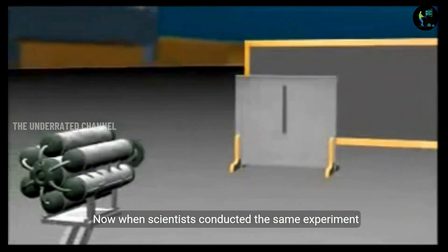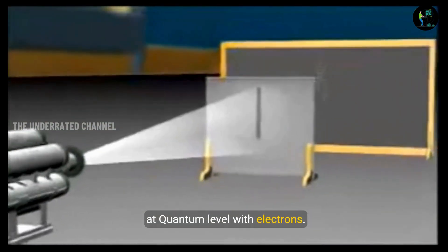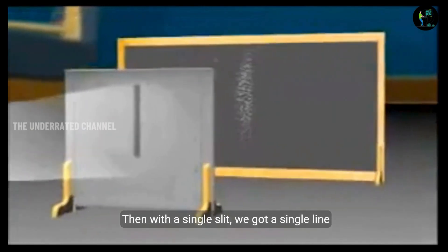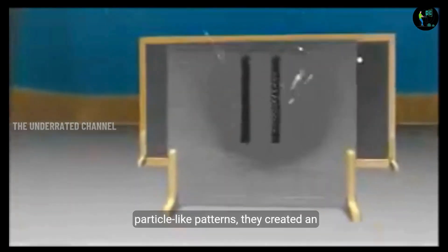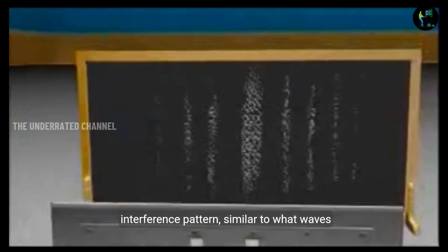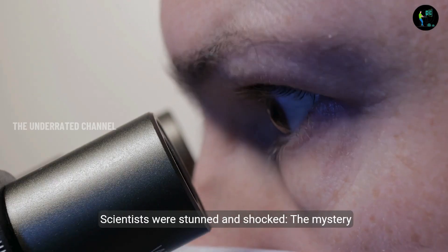Now, when scientists conducted the same experiment at quantum level with electrons, then with a single slit, we got a single line pattern. But with two slits, instead of forming two particle-like patterns, they created an interference pattern similar to what waves produced earlier. Scientists were stunned and shocked.